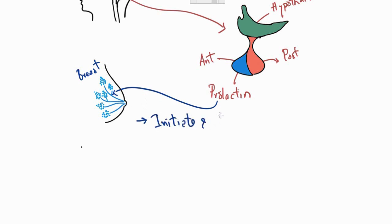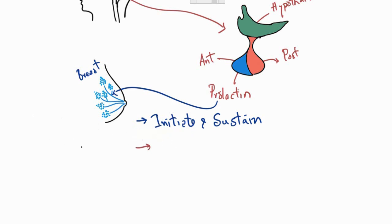The major function of prolactin is to initiate and sustain the production of milk throughout the nursing period. Prolactin levels will be very high, ensuring that adequate milk is produced for the newborn baby. Another important function is that prolactin has an inhibitory effect on the reproductive system.